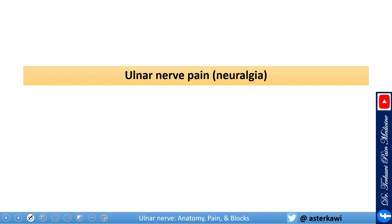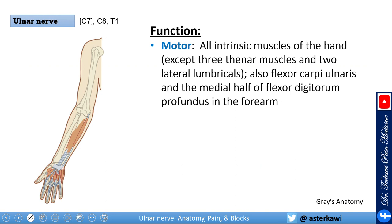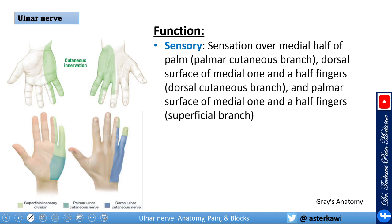The ulnar nerve is motor to all intrinsic muscles of the hand except the three thenar muscles and two lateral lumbricals, also supplying the flexor carpi ulnaris and the medial half of the flexor digitorum profundus in the forearm. Sensory distribution includes sensation over the medial half of the palm via the palmar cutaneous branch, the dorsal surface of the medial one-and-a-half fingers via the dorsal cutaneous branch, and the palmar surface of the medial one-and-a-half fingers via the superficial branch.